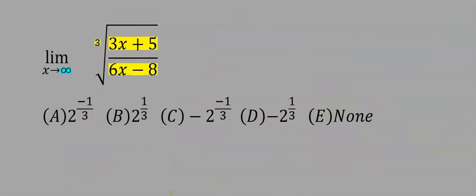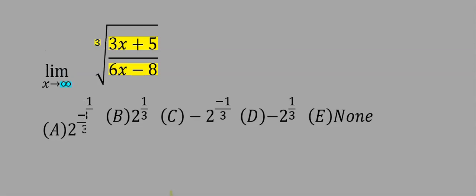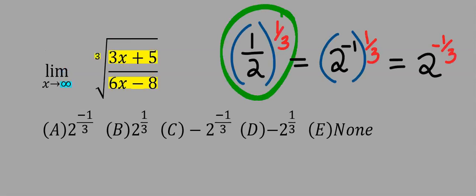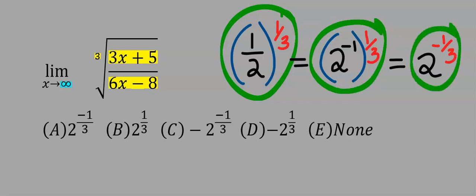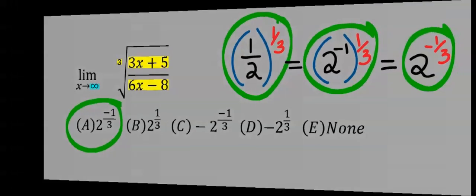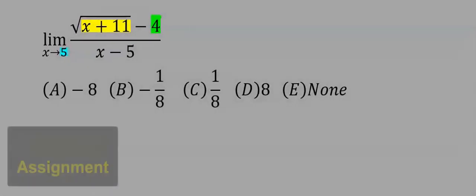This becomes our answer. From the options it seems we are going for none, however you need to rearrange the result. We can take the two up and it acquires a minus one exponent, which is the same, and the minus will multiply one over three at the top. The answer is option A.